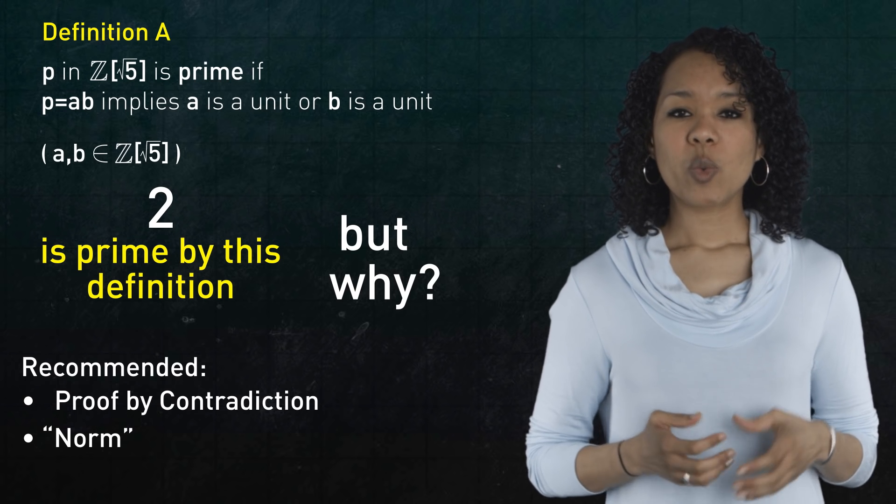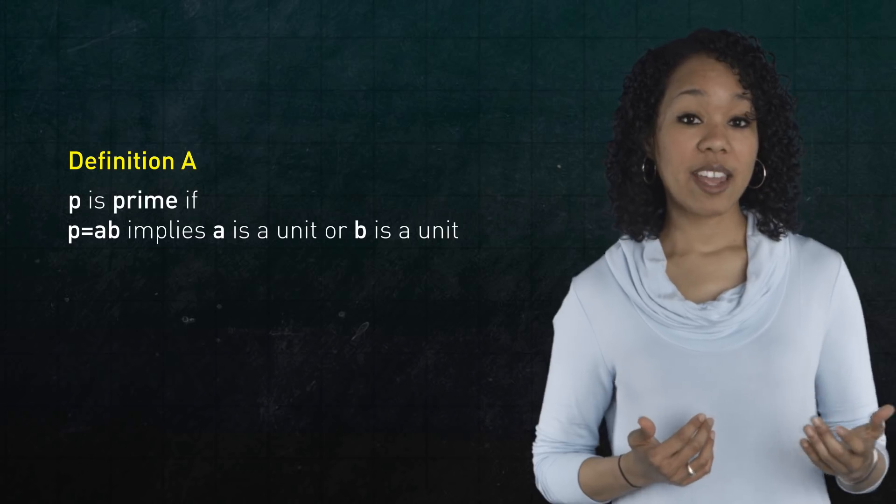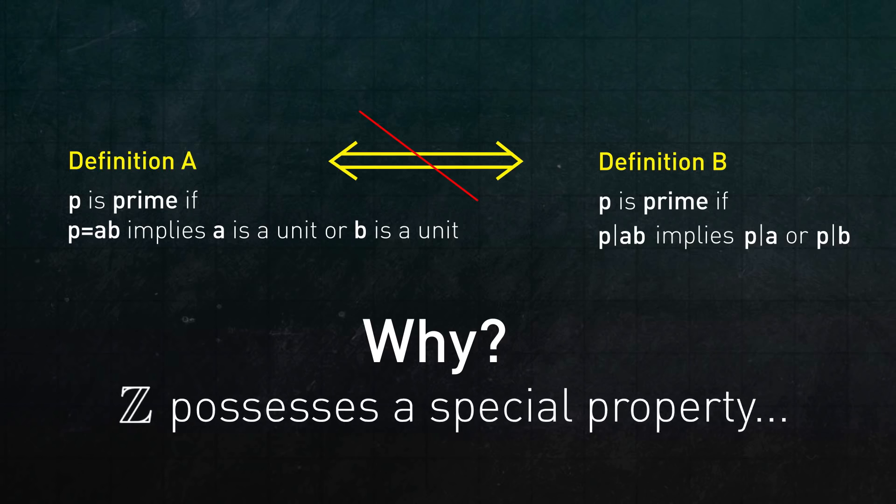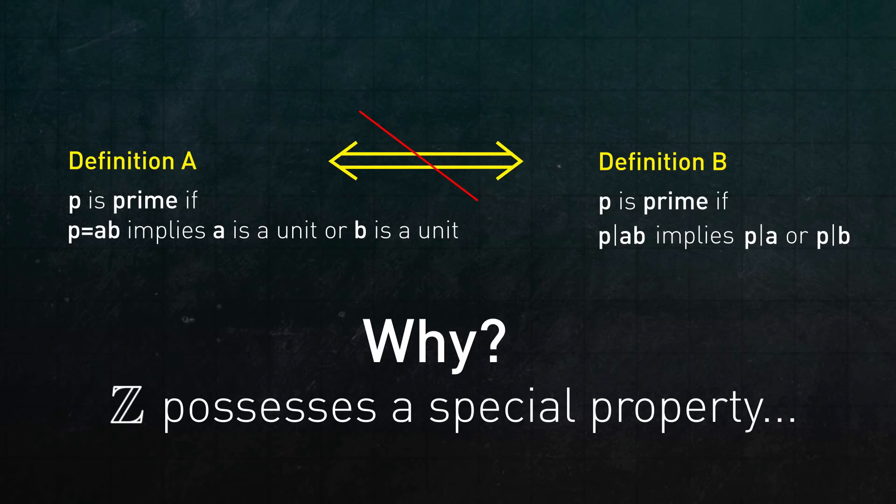All right, let's summarize. We have two definitions, a and b. When working with the integers, these definitions imply each other. But in Z adjoined root 5, they do not. Why? The reason is because the integers possess a very special property that Z adjoined root 5 does not have.